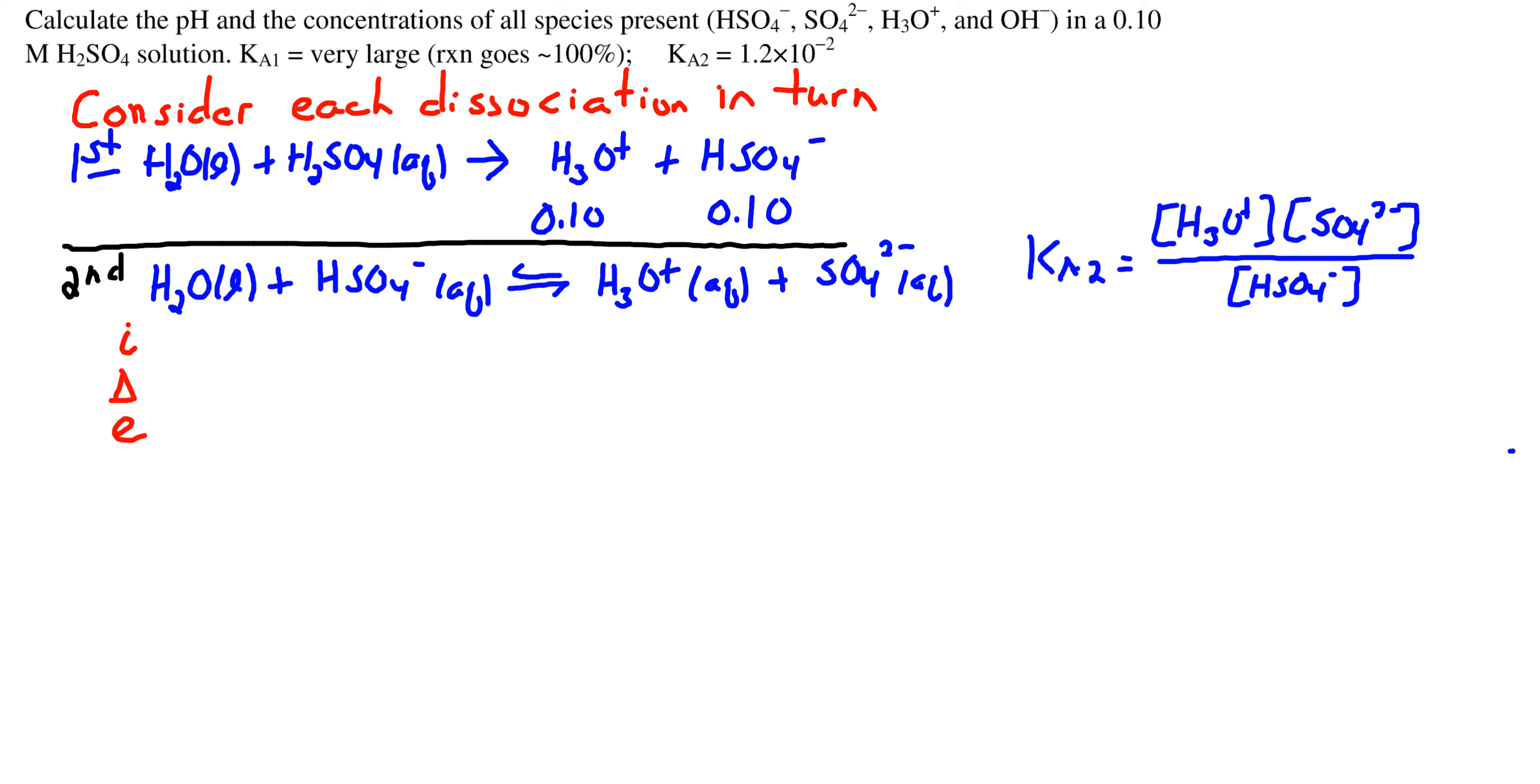We have our balanced chemical equation for the second dissociation, and again we're starting with an initial concentration of HSO4- of 0.1 and H3O+ of 0.1. This comes from the first dissociation.